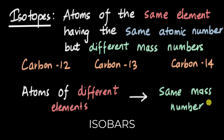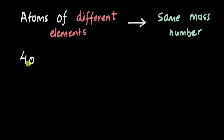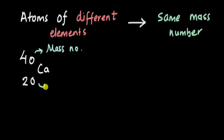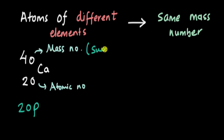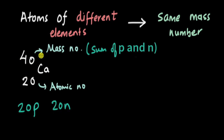Let's have a look at some examples of isobars. We can have a calcium atom. The number 40 at the top is the mass number of the element, and 20 at the bottom is the atomic number. So for calcium the mass number is 40 and the atomic number is 20. That means the number of protons in a calcium atom is 20. The mass number is the sum of protons and neutrons, so if protons are 20, the neutrons would be 40 minus 20, which is 20 neutrons, and the mass number comes out to be 40.